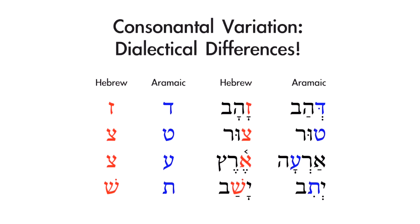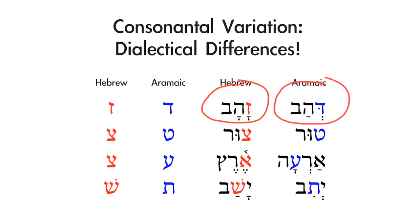The first thing we're going to see are consonantal variations based on dialectical differences. There are three consonants in Hebrew that may be represented differently in Aramaic. Understanding these slight differences will help you build vocabulary without feeling like you're memorizing entirely new words. For example, the Hebrew Zayin may be represented by the Aramaic Dalet. Here you see the Hebrew word for gold, Zahav — in Aramaic it's spelled with a Dalet, Dahav. The difference between the Zayin and the Dalet is based on dialectical variation.